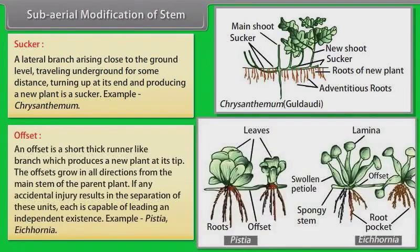An offset is a short, thick, runner-like branch which produces a new plant at its tip. The offsets grow in all directions from the main stem of the parent plant. If any accidental injury results in the separation of these units, each is capable of leading an independent existence. Example: Pistia, Eichhornia.